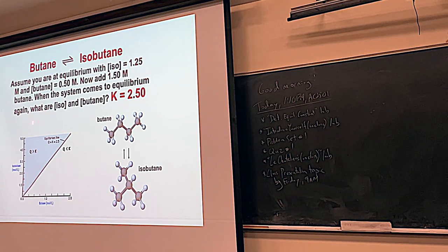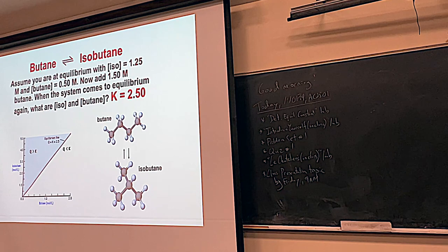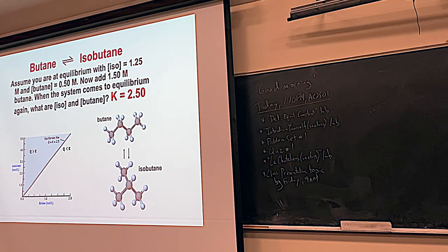This is a graph of the concentration of isobutane versus butane. If you're at equilibrium, K is like a slope with a Y-intercept of zero. This line here has a slope of 2.5, representing all the points where the concentration of isobutane divided by butane equals 2.5.